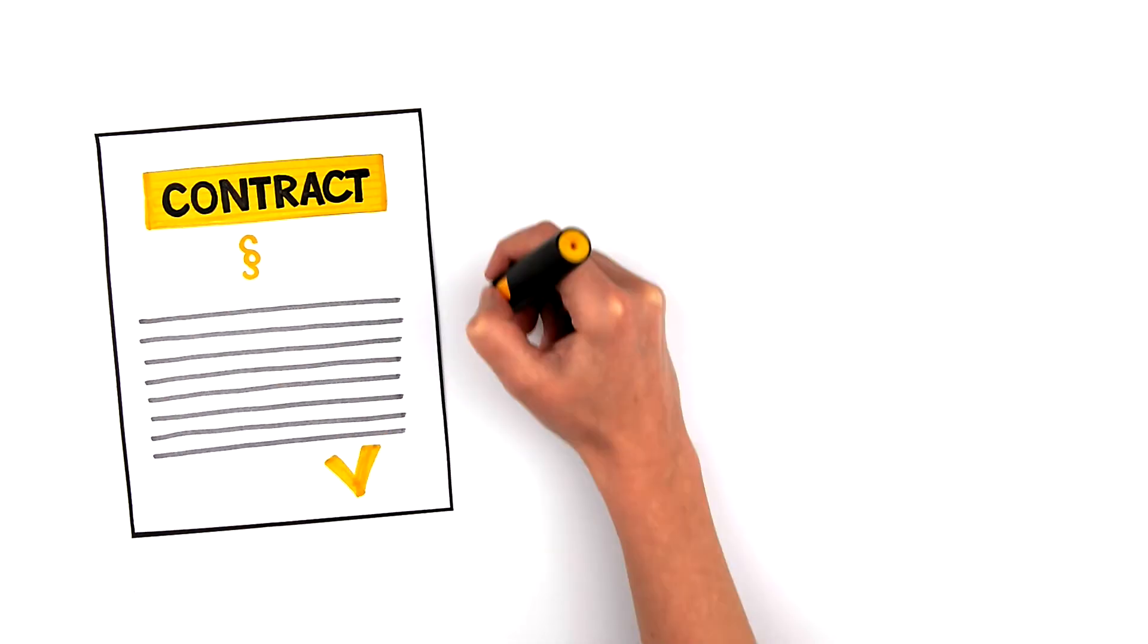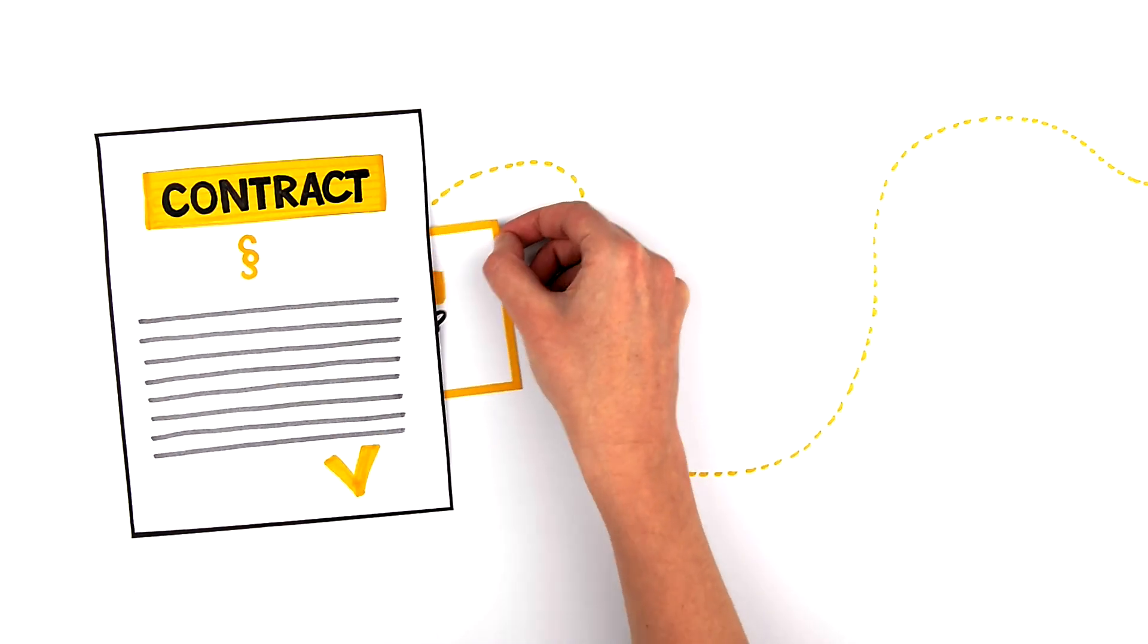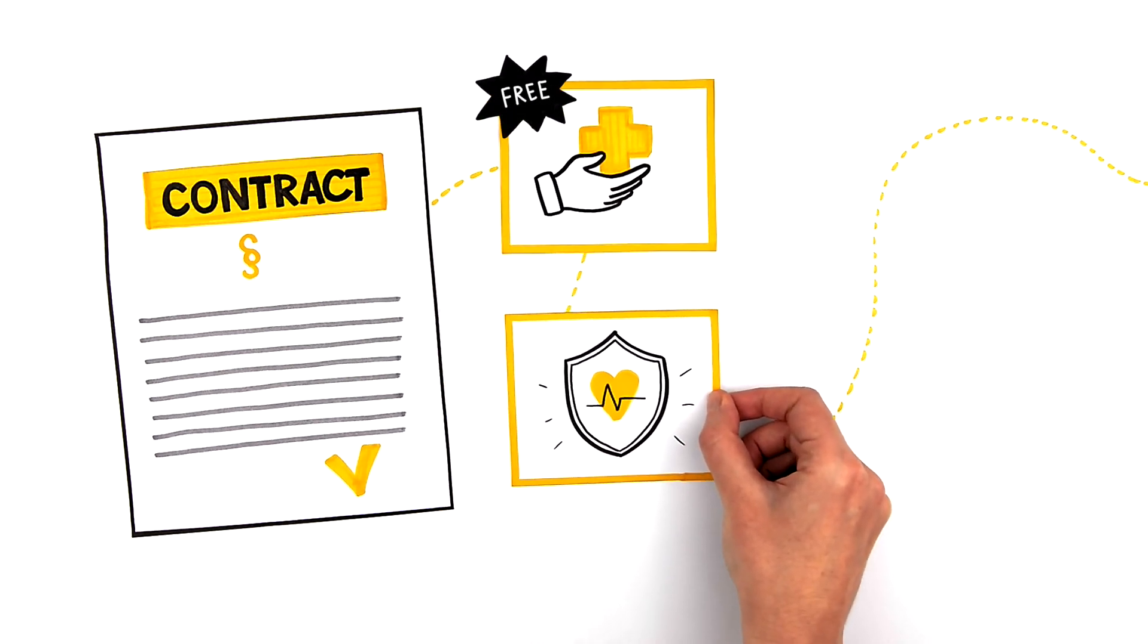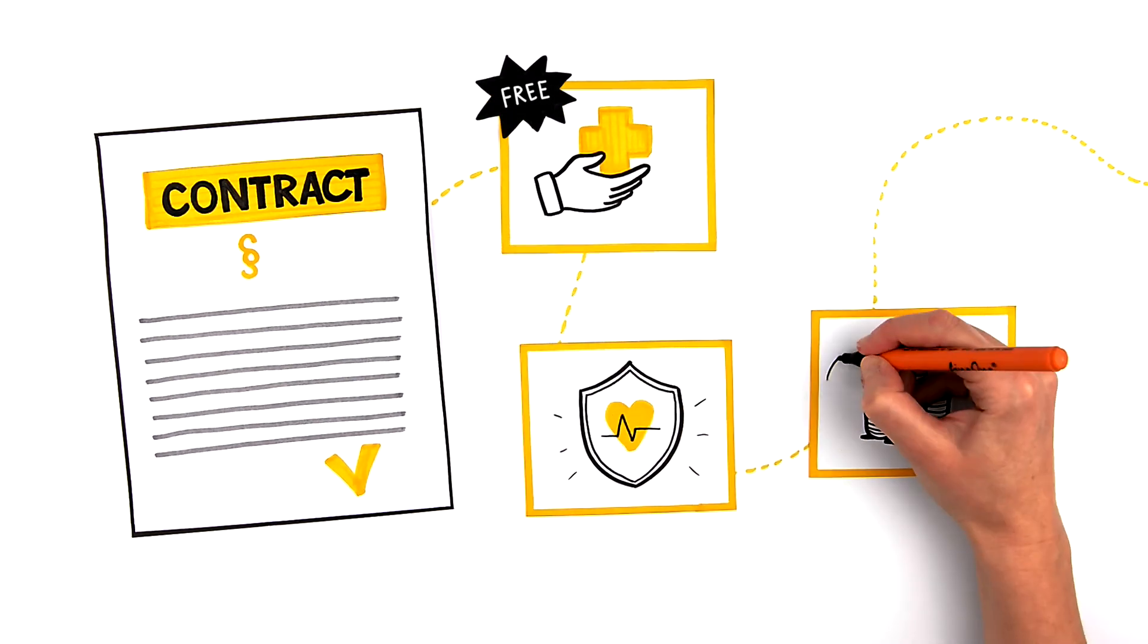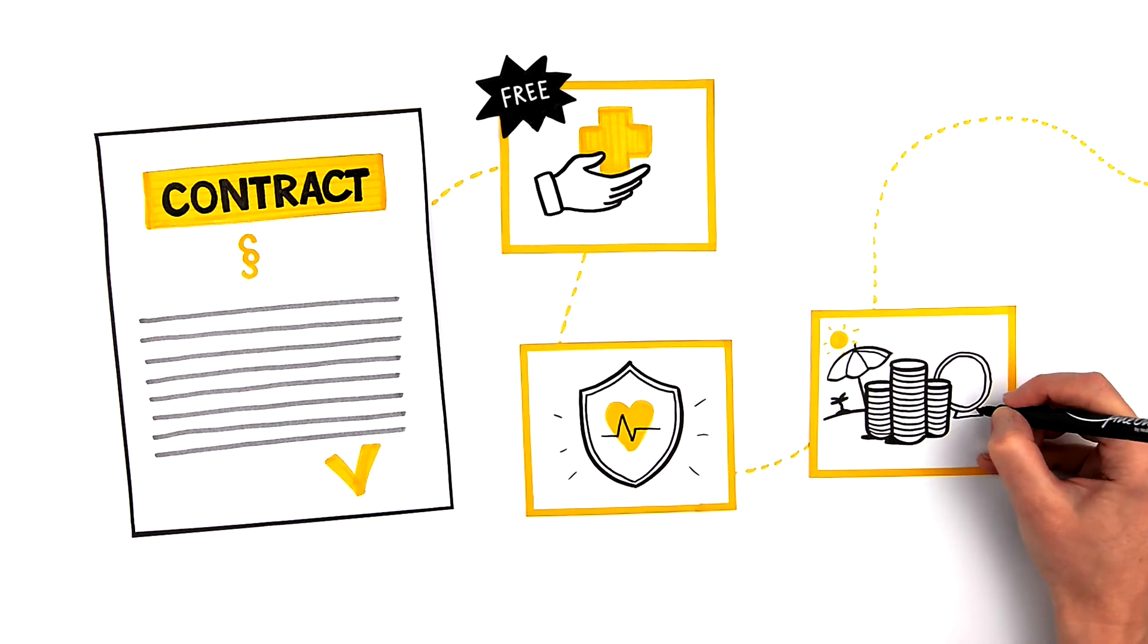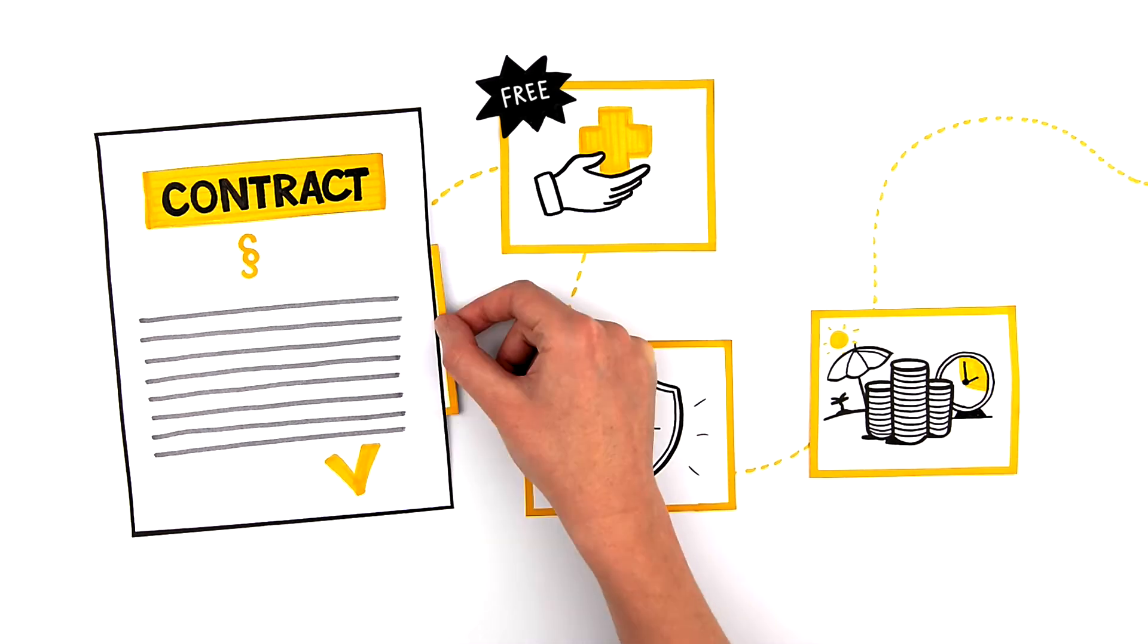If your employment contract is regulated by the Labor Code, you're usually entitled to free medical care, health insurance, paid holiday leave or financial compensation for overtime work, and Social Security.